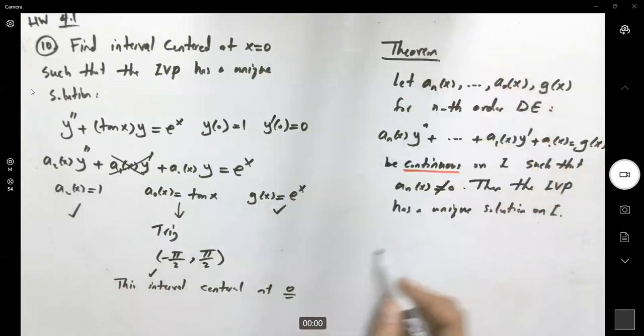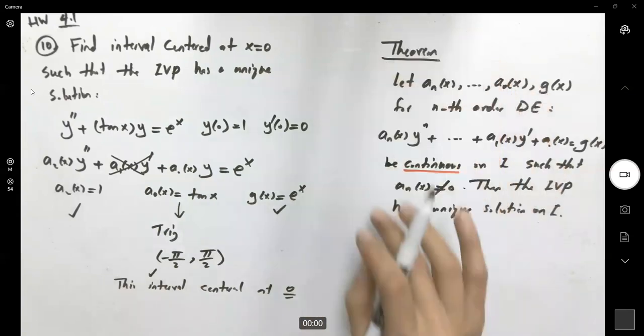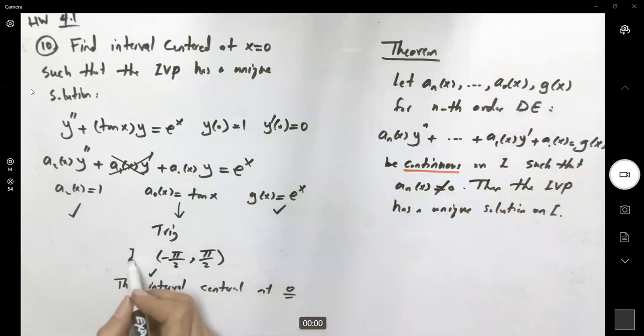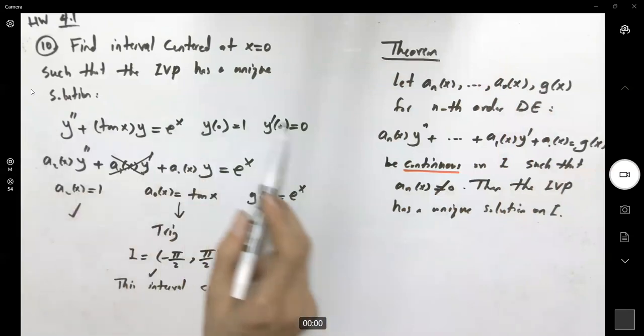So following the theorem, this guarantees that on this interval, the initial value problem has a unique solution.